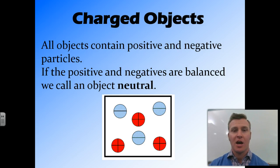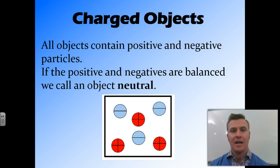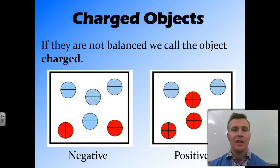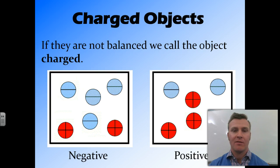All objects contain both positive and negatively charged particles inside them. If an object has the same amount of positive charges and negative charges, we say that object is neutral. For example, a box with three negative charges and three positive charges is neutral. However, if the amount of charges isn't balanced — there's more of one charge than another — we call that object charged.